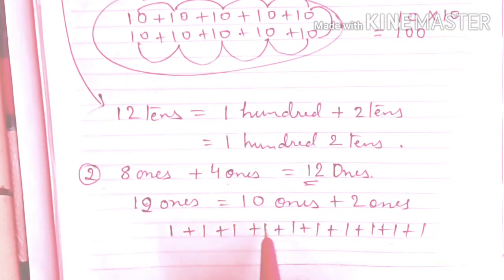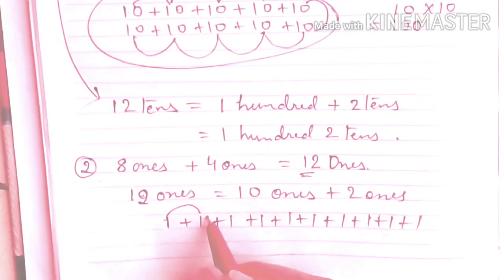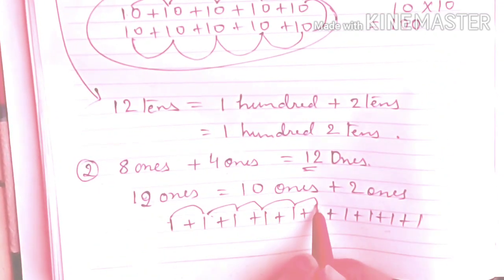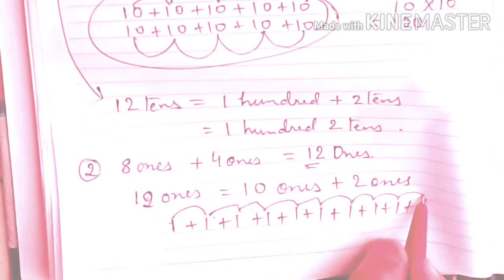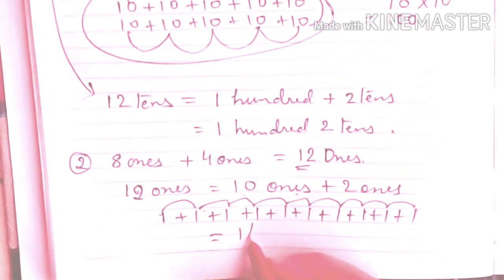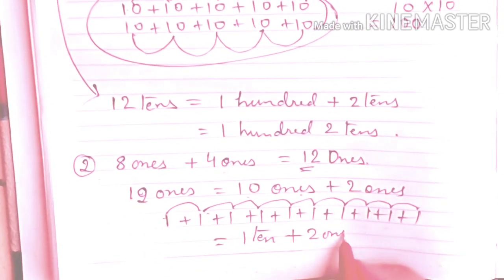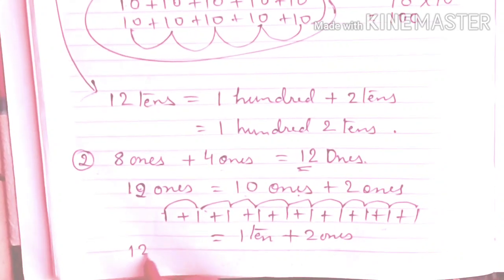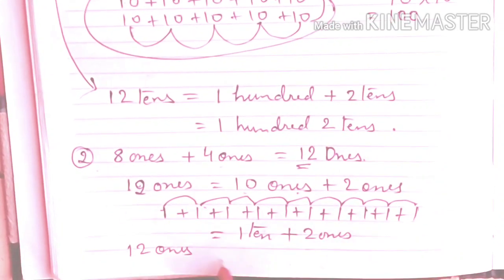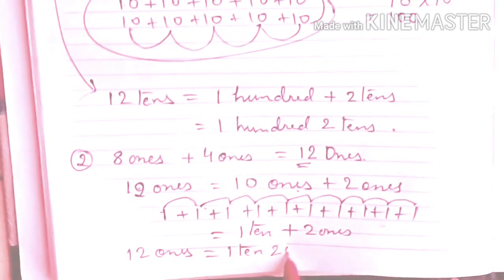If we have 10 ones, how much is that? Let's add and see. 1, 2, 3, 4, 5, 6, 7, 8, 9, 10. 10 ones give you 1 ten. And here is 2 ones remaining. So 12 ones is equals to 1 ten and 2 ones. Okay?